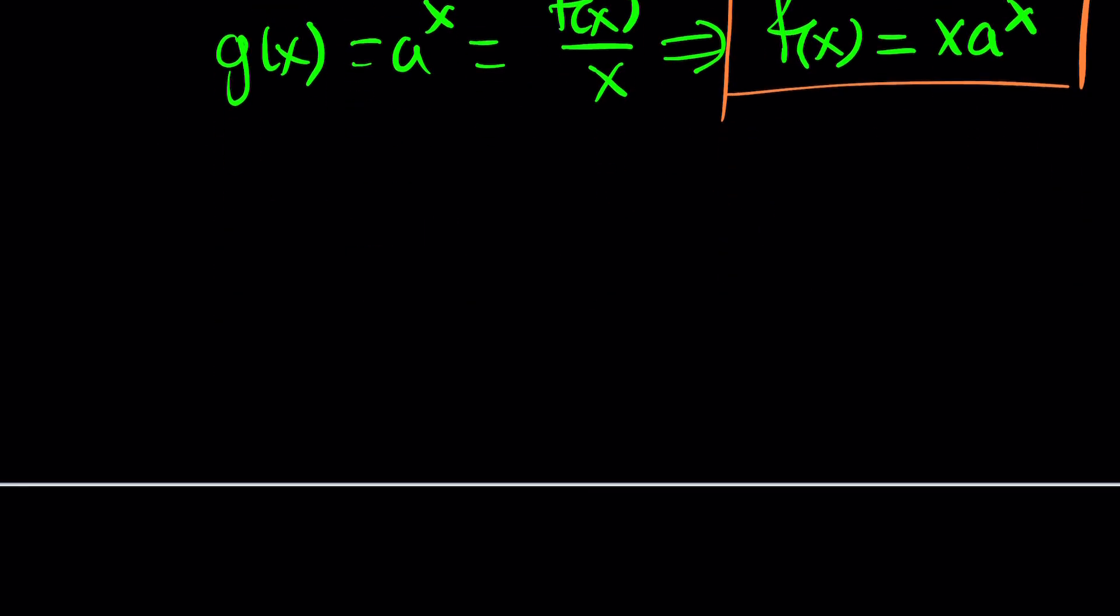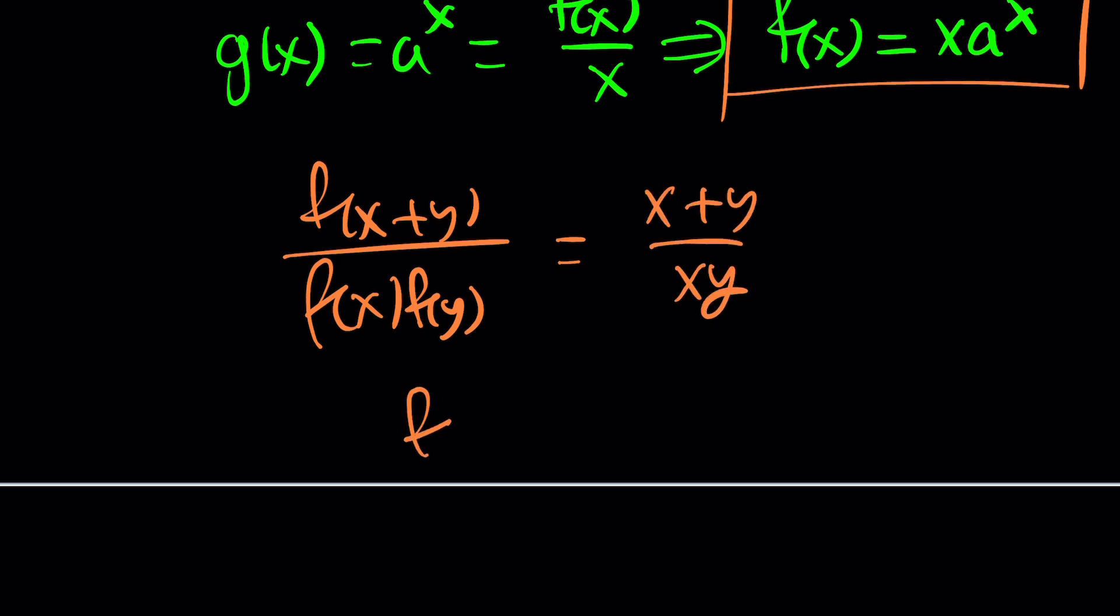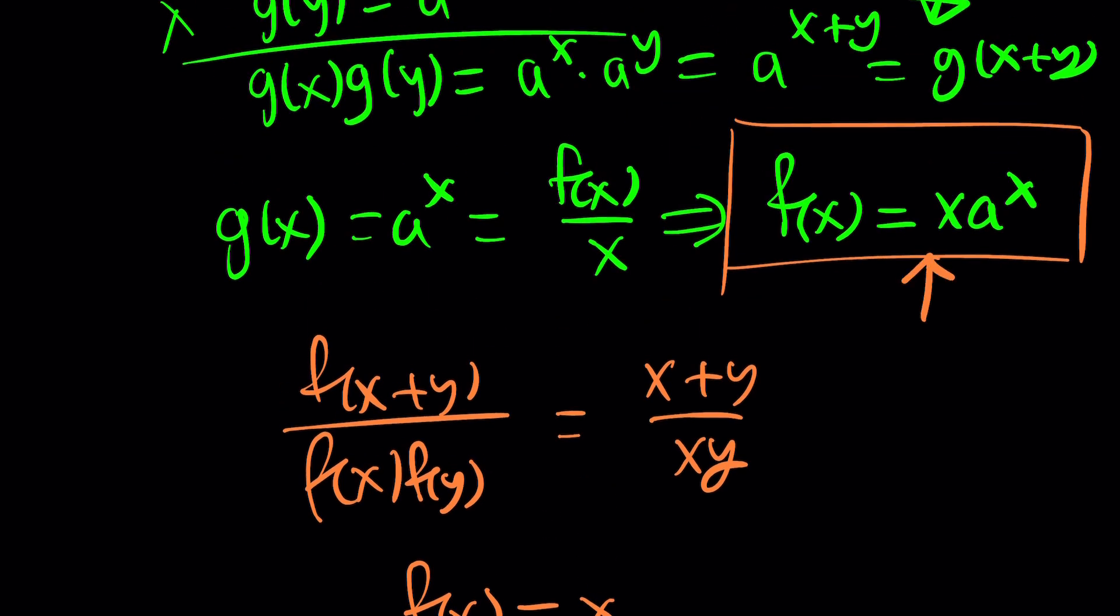But wait a minute, at the very beginning, we had this equation. And let's go back to the very beginning, beginning of time. Now, x plus y over xy. And we said that, hey, from here, f of x equals x seems to work. And it does, but are you now saying that it is not just x, but x times a to the power of x? Yes, that's also true. How can they both be true? It's true because if a is 1, then f of x becomes x. So, everybody is happy.